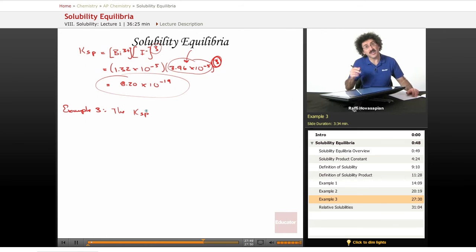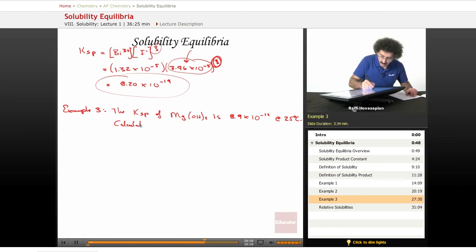Let's see what the solubility is. The Ksp of magnesium hydroxide is 8.9 times 10 to the negative 12 at 25 degrees Celsius. Calculate its solubility.